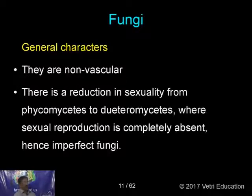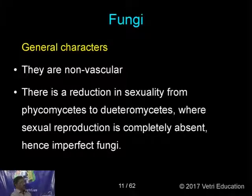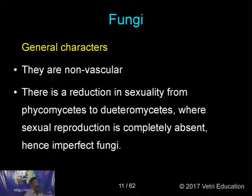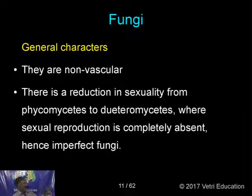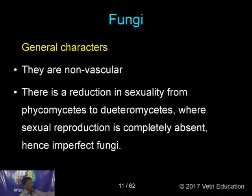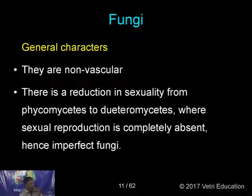Fungi are non-vascular — they do not have vascular tissue like xylem and phloem. There is a reduction in sexuality from Phycomycetes to Deuteromycetes. Phycomycetes is the first group in Eumycotina (true fungi), while Deuteromycetes is the last group where there is no sexual reproduction — only asexual reproduction. This reduction in sexuality from primitive to advanced fungi results in Deuteromycetes being called imperfect fungi.